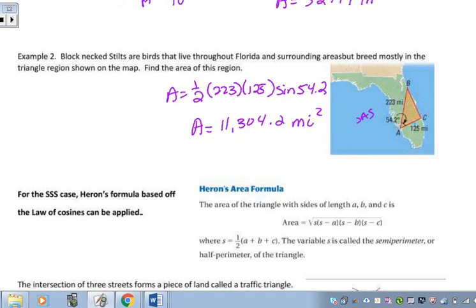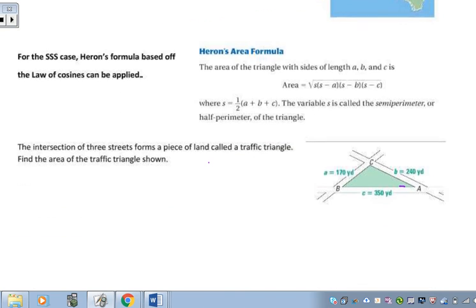The other formula we're going to visit today is called Heron's formula. This happens when we get a side, side, side situation. And this is the formula here. A, B, and C represent the three sides. What's new is this variable of S. And S is 1 half the sum of the three sides.